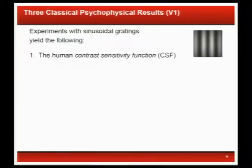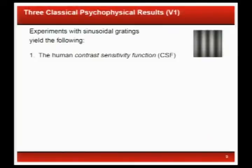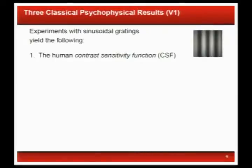Let's look at three classical results for V1. Before I talk about the results, note that these are experiments with sinusoidal gratings. What we have is a sinusoidal grating — I've picked something that varies only in the horizontal direction and I've weighted it by a Gaussian. This is referred to as a Gabor patch. This is the probe — the visual equivalent to those individual tones you get in audio tests when you put earmuffs on and your hearing is tested.